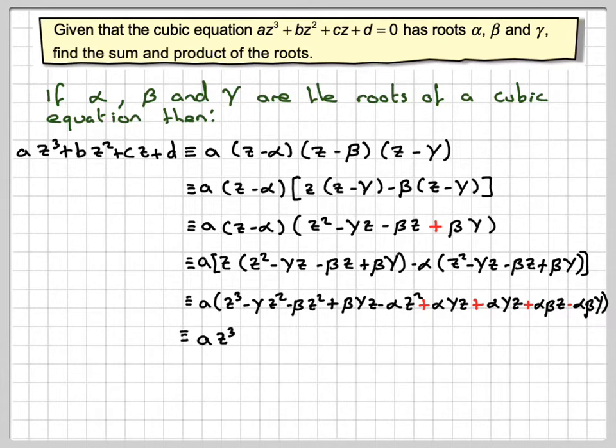So we've got az³, and here we've got z², z², and z². So that will become minus a times alpha plus beta plus gamma times z² when you take the minus sign out of all those. This gives me the sum of the roots.